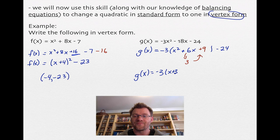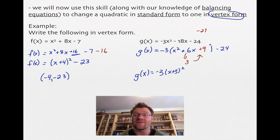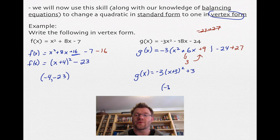So g of x equals negative 3 times x plus 3 squared. Now I need to balance the equation. The 9 is being multiplied by negative 3 outside the brackets, so I'm actually adding 9 times negative 3, which is negative 27. To balance, I add positive 27. That gives me negative 24 plus 27 — a positive 3. So the vertex is at negative 3, 3. The more you practice this process, the quicker you'll convert from standard to vertex form.